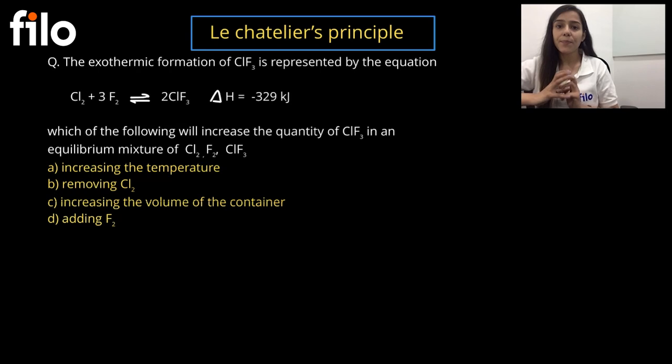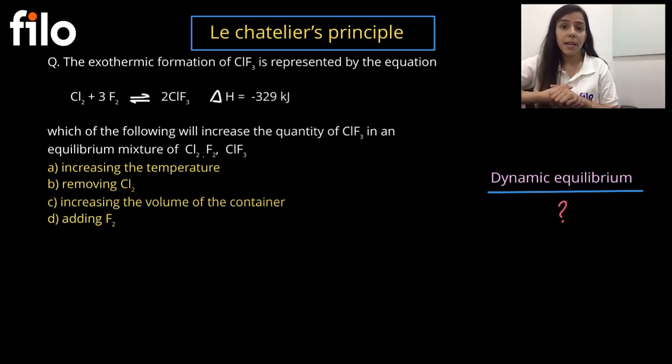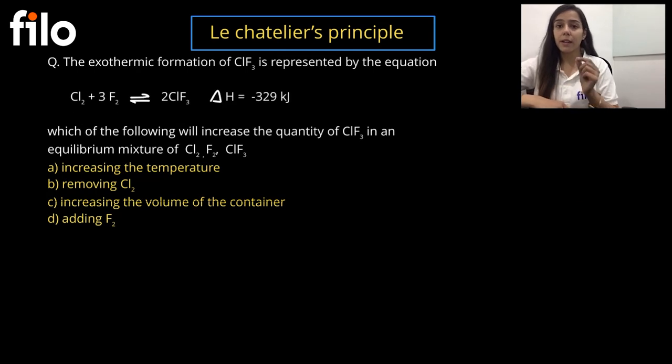What is the Le Chatelier principle? The Le Chatelier principle is that if any reaction is in dynamic equilibrium - meaning chlorine and fluorine react to form product, and at the same time the product is also forming the reactant back again - the reaction is continuously going on. But because the concentration is not changing, the rate of forward and the rate of backward are equal. This is the state of dynamic equilibrium.